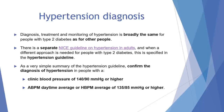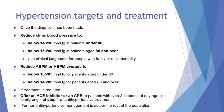In respect of diagnosing and managing hypertension, we must bear in mind that the diagnosis, treatment and monitoring of hypertension is broadly the same for people with type 2 diabetes as for other people. There is a separate NICE guideline for hypertension, and when a different approach is needed for people with type 2 diabetes, this is specified in that hypertension guideline. As a summary, we need to confirm the diagnosis of hypertension in people with a clinic blood pressure of 140/90 or higher, and an ambulatory blood pressure monitoring average or home blood pressure monitoring average of 135/85 or higher.